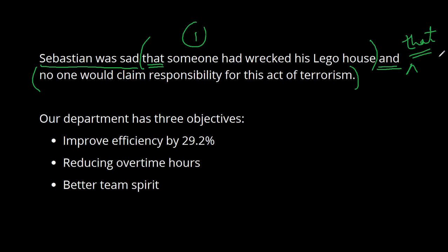One final example to look at, and this is one that often happens in bureaucratic writing. So this one reads, our department has three objectives. Then we have some kind of silly objectives here, and if you use bullets it's easy to forget about parallelism. So try to make your bullets kind of the same if you can. The first one here starts with improve, so that's a verb here, and then the second one reducing, which is a present participle, ends in -ing, and the last one does not start with a verb at all. We just want better team spirit.